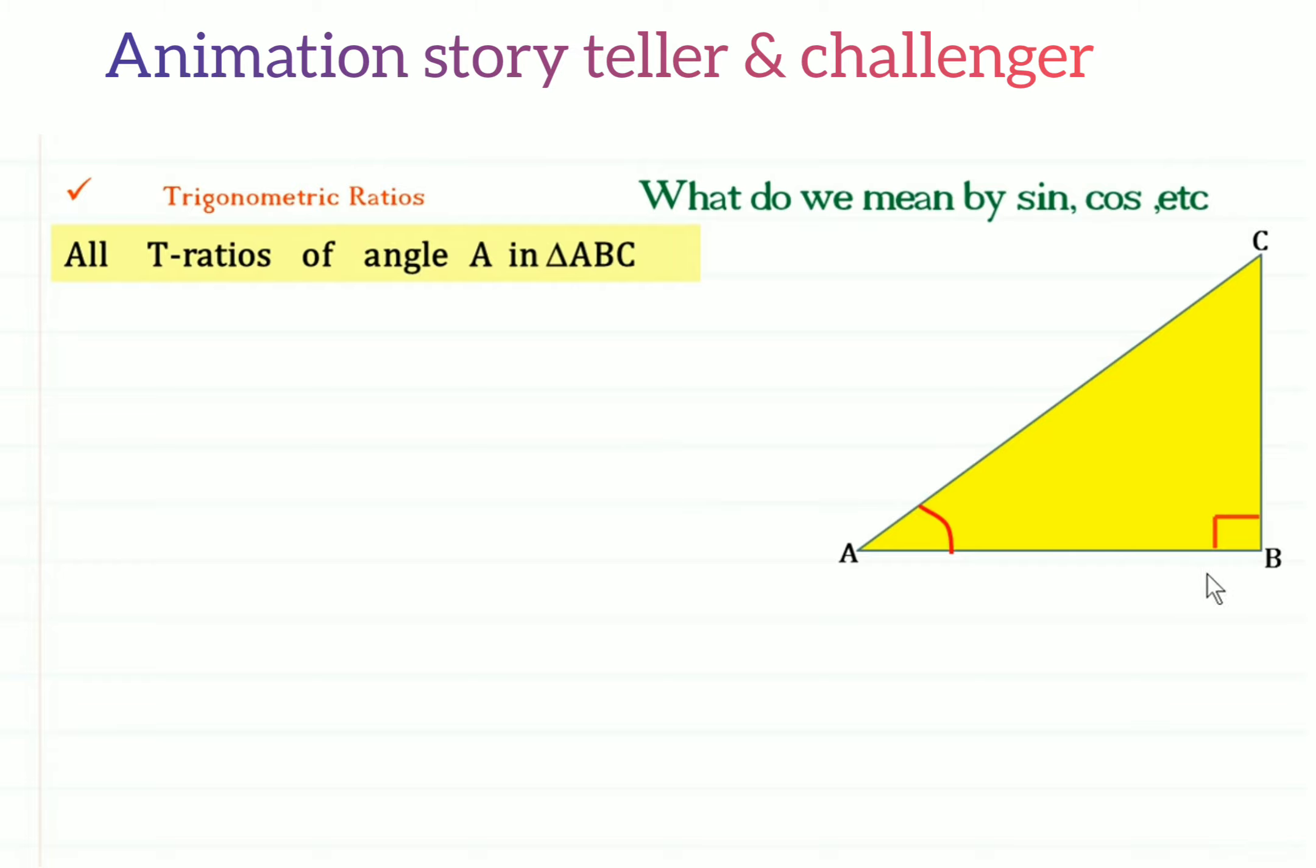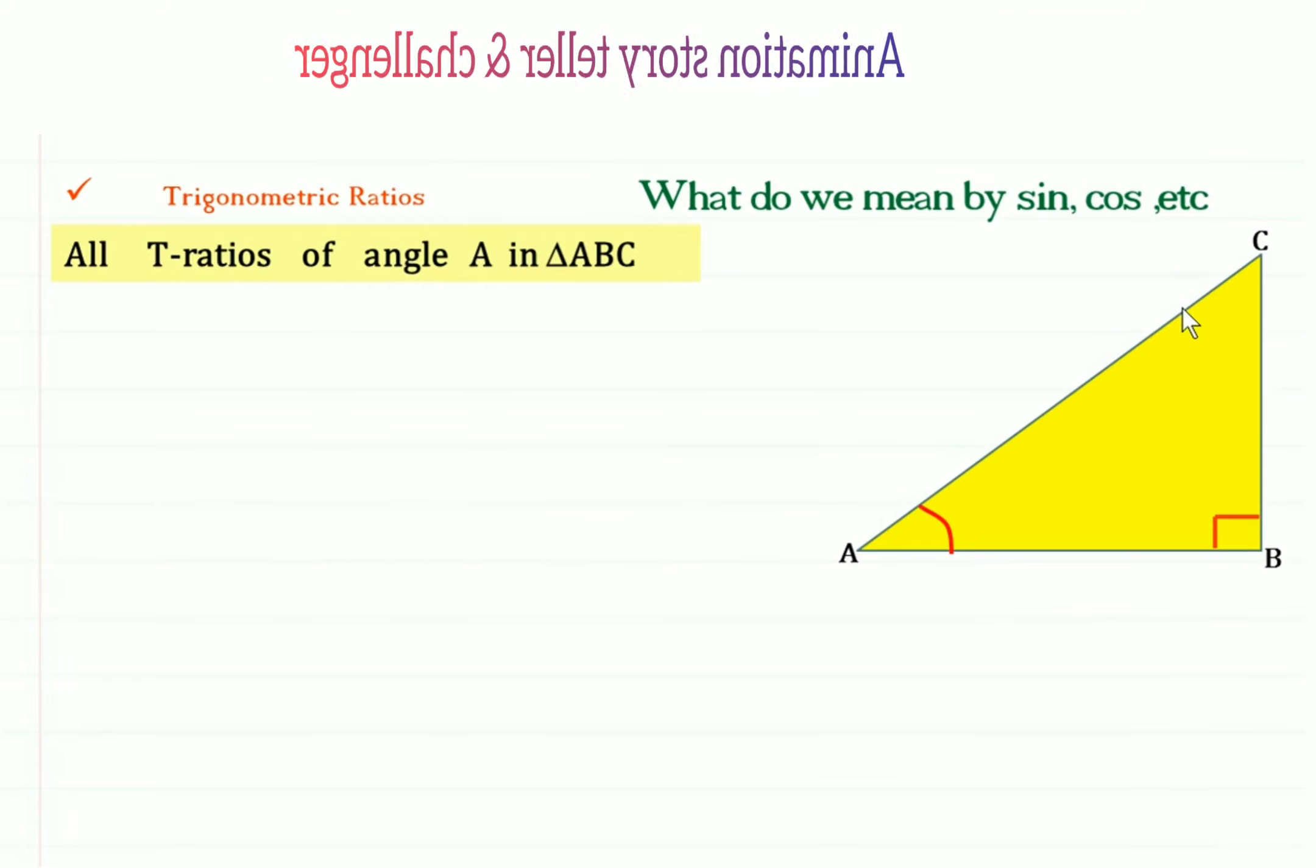We have taken this triangle ABC. It is right-angled at B. So for this angle A, this will be the opposite side or perpendicular, this will be the base, and the side AC would be the hypotenuse, which is the longest side.